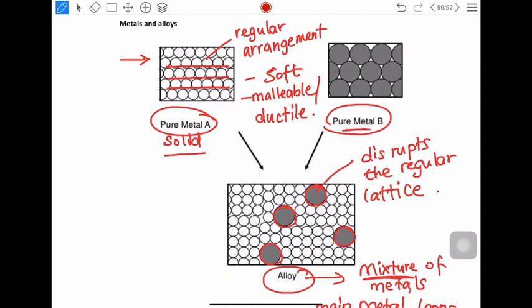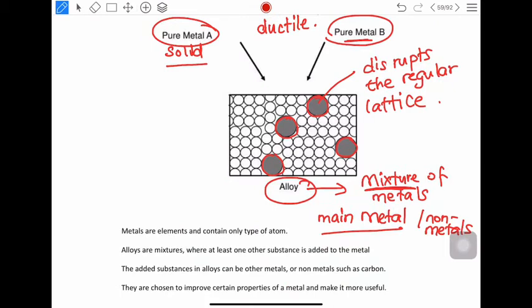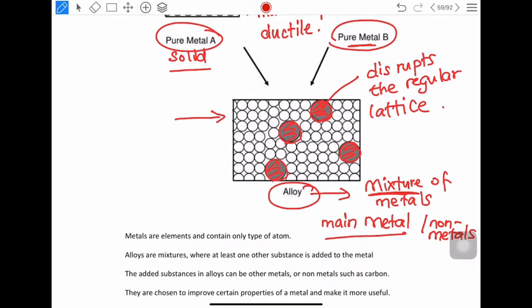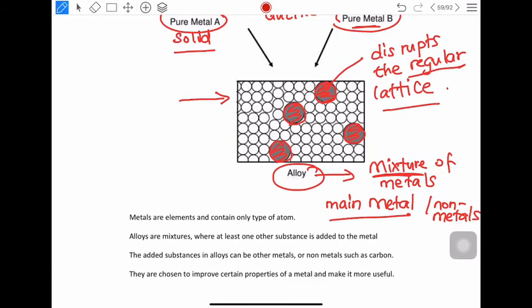This is the effect of the second metal on a pure metal when you have the formation of an alloy. Now when you apply a force, these bigger particles of the other metal act kind of like an impurity, so it prevents the layers from sliding because the regular lattice has been disrupted.